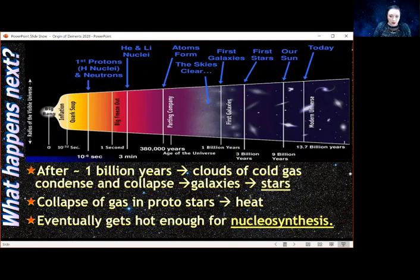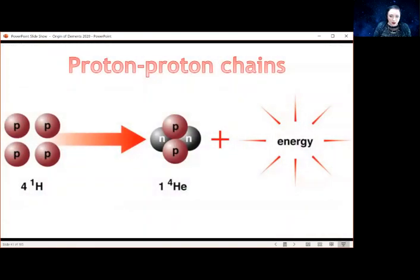Let's start with the same process that's happening in the early universe where you have lots of protons, that's hydrogen. Here I've got four protons and they come together and they make one helium and give out energy in the process. That's the same thing that's happening in the early universe that we went through in a previous video.